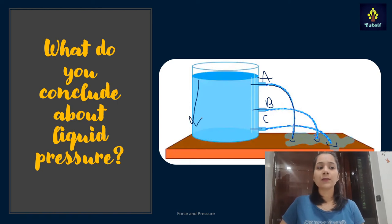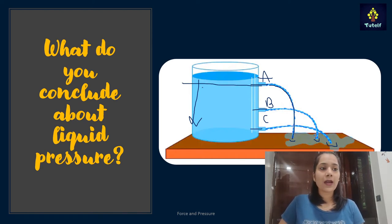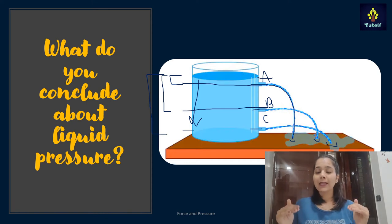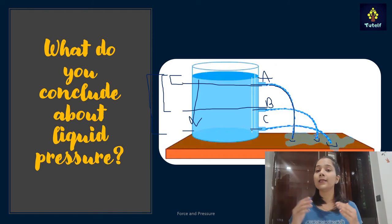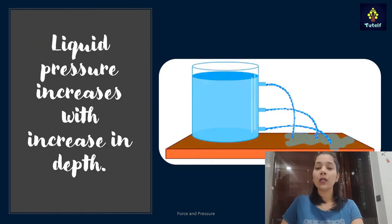Why does liquid pressure increase with depth? At A, fewer particles are applying force. At B, particles from the top to the midpoint apply force. At C, even more particles apply force. Since pressure equals force divided by area, pressure is directly proportional to force. At C, the number of particles is greater, so the force applied is much greater, and hence the liquid pressure at C is much more than at A.